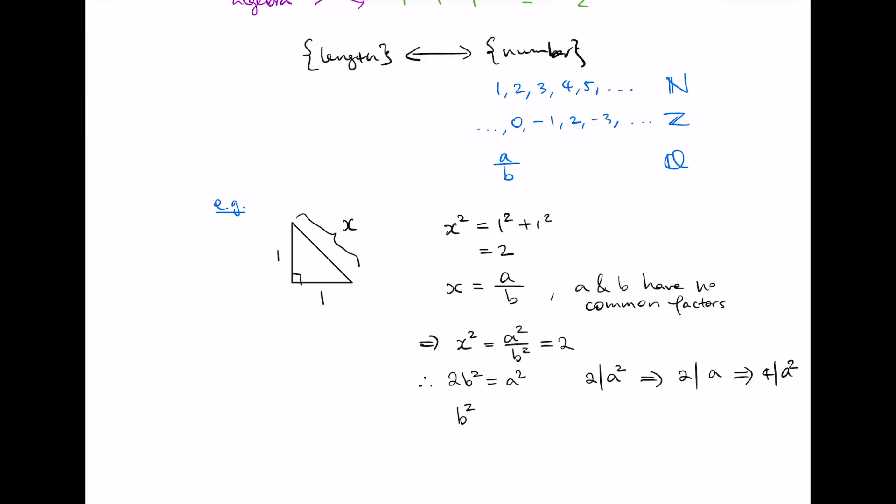But now b squared is equal to a squared divided by 2. So if a squared is divisible by 4, then b squared must be divisible by 2. And again, by the same logic, b is divisible by 2. But this means that 2 is a factor of b and a factor of a, which contradicts our original assumption that a and b have no common factors.